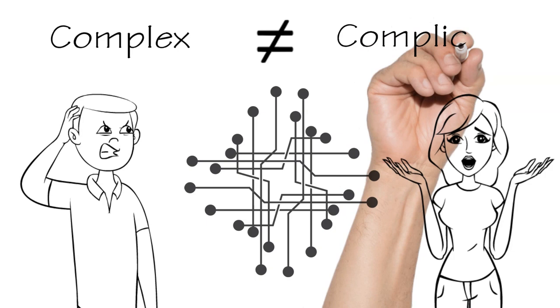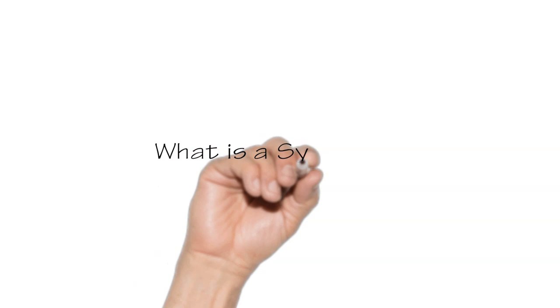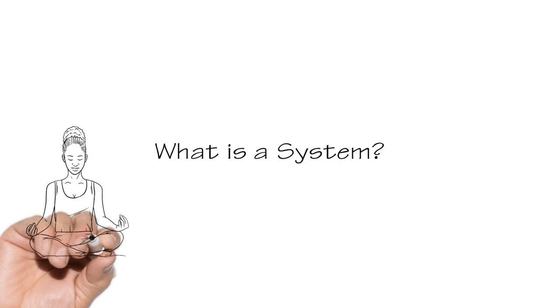Complexity is about the relationship between the pieces of a system and the behavior of that system. But first, what's a system? Well, systems are everywhere.